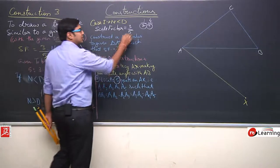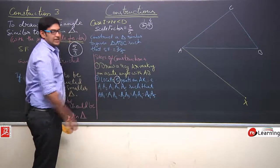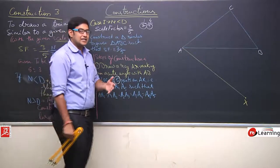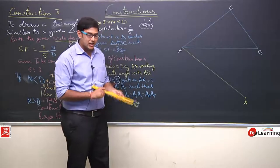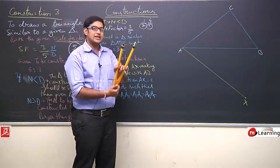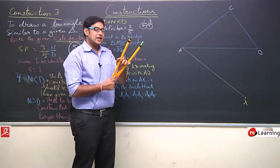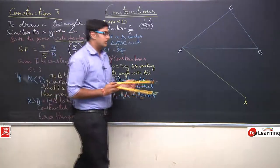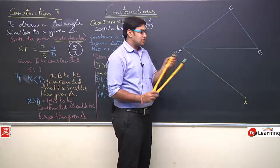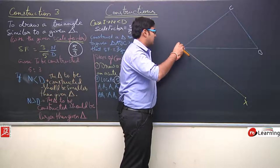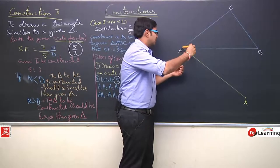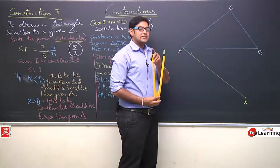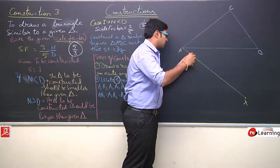Our condition is: scale factor is 3 by 5, so I will locate 5 equidistant points on Ax. We learned how to locate equidistant points — take some given radius, and using that radius locate or mark 5 different arcs. First, place the compass needle at point A and mark an arc. Then place the needle at that arc and mark another arc. Continue this process.